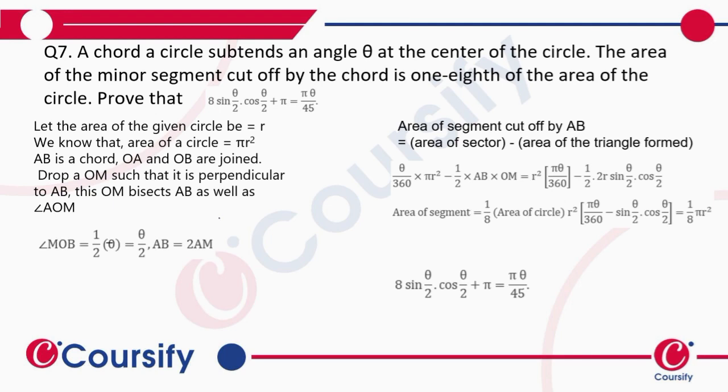First we'll see what is given. The area of the circle - actually, the radius of the circle is r, and the area of the circle will be pi r squared. AB is the chord. So this is the circle, AB is the chord, and OA and OB are joined.